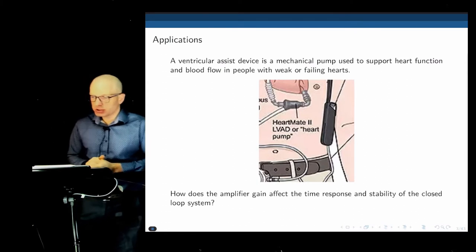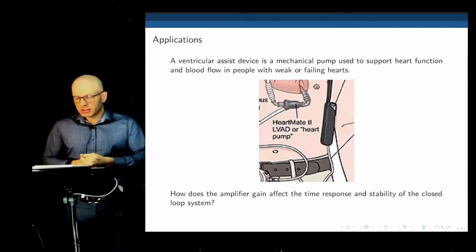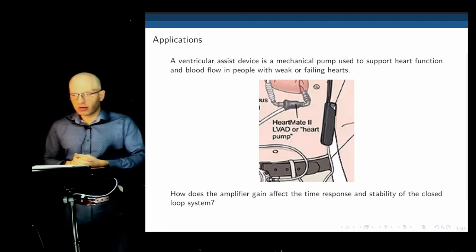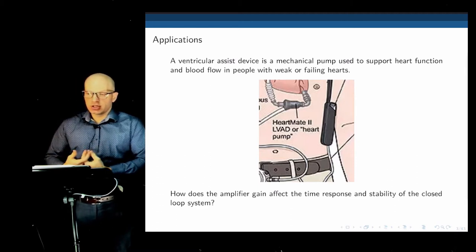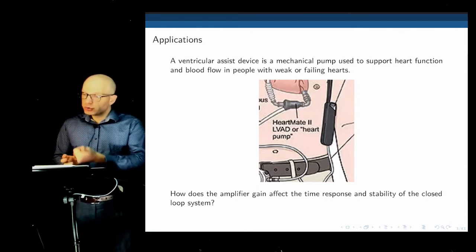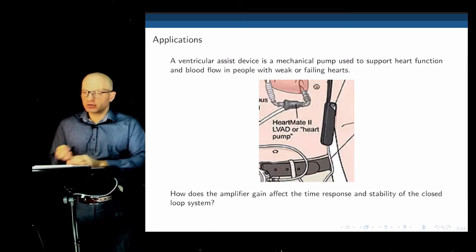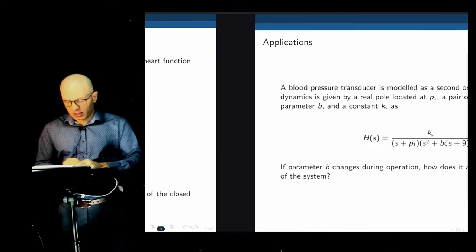There are several applications of this. For example, a ventricular assist device is a mechanical pump that regulates heart function. If one parameter in this system, such as an amplifier gain, changes during operation or if you tune it, how does that affect the stability of the system? How does that affect overshoot and time response? We can use the method we're going to see today to assess that.